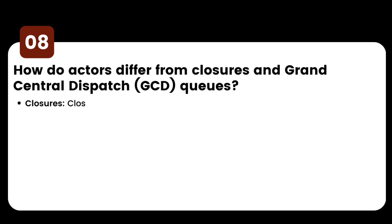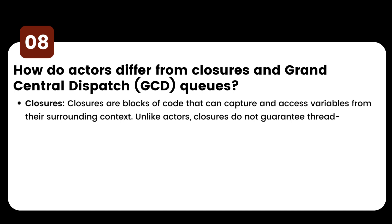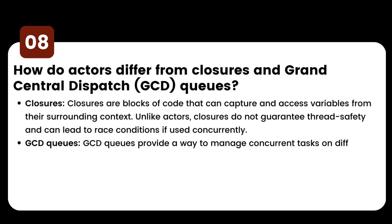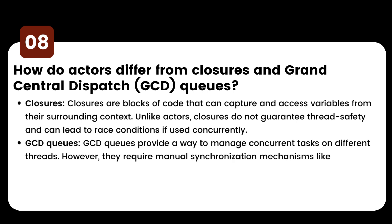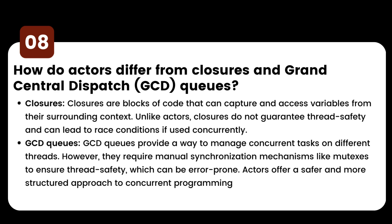How do actors differ from closures and GCD queues? Closures are a block of code that can capture and access variables from their surrounding context. Unlike actors, closures do not guarantee thread safety and can lead to race conditions if used concurrently. GCD queues provide a way to manage concurrent tasks on different threads; however, they require manual synchronization mechanisms like mutexes to ensure thread safety, which can be error-prone. Actors offer a safer and more structured approach to concurrent programming.